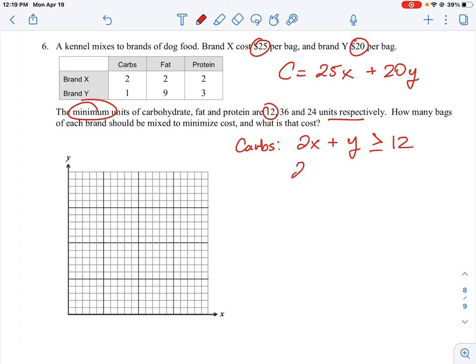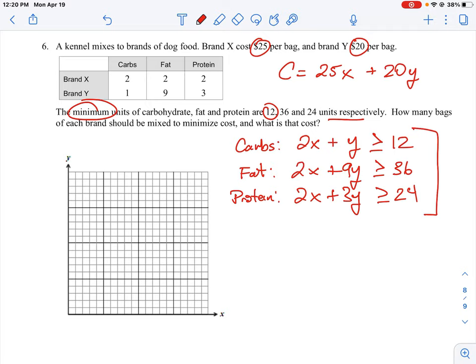So it would be 2X plus 9Y. And this is for the fat. And again, we have to have a minimum of 36, which means that it has got to be at least 36, but we could have more. It could be 37, 38, 40, 50, right? So that is the equation for the constraint for that. And then the protein is 2 units of X plus 3 times the number of units for Y, and we have to be at least 24. So now we have our equations, where we have our cost equation, and we have three equations here, which are our constraints on the quantities.